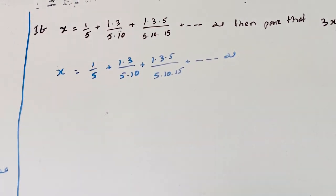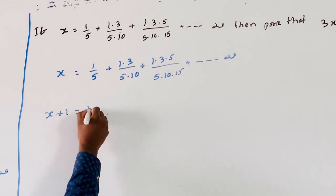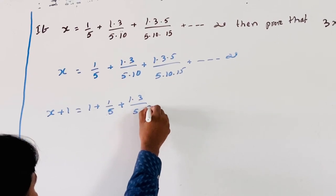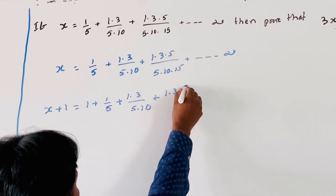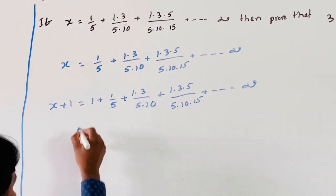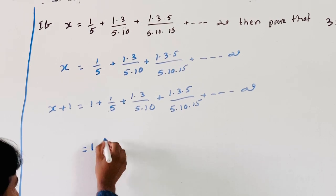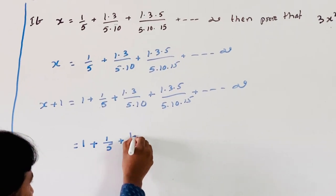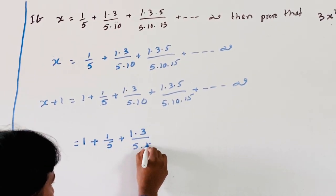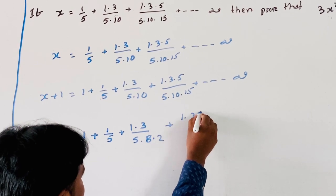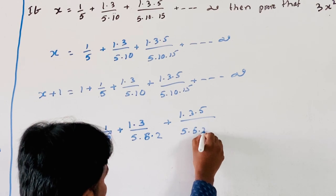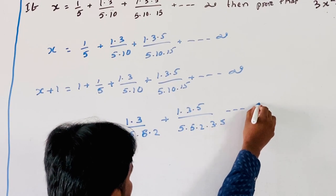Adding 1 to both sides: x + 1 = 1 + 1/5 + (1·3)/(5·10) + (1·3·5)/(5·10·15) and so on to infinity. Rewriting the denominators: 5·10 = 5·(5·2), and 15 = 3·5.